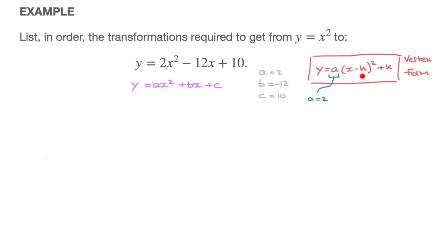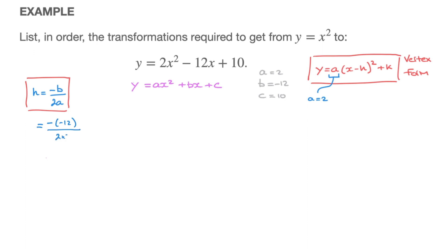For h, there's a nice formula: h is equal to negative b over 2a. For the parabola we have, since b is negative 12 and a is 2, we find that h equals negative (negative 12) over 2 times 2, which is 12 over 4. So h is equal to 3.